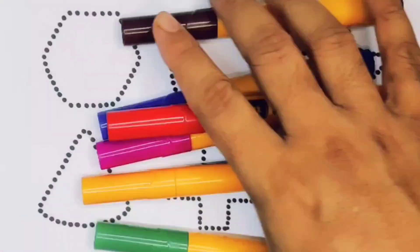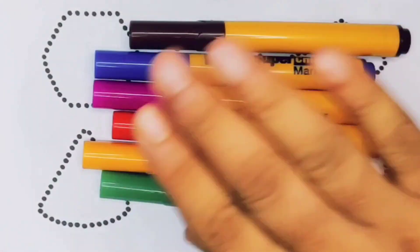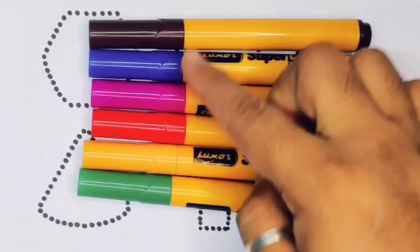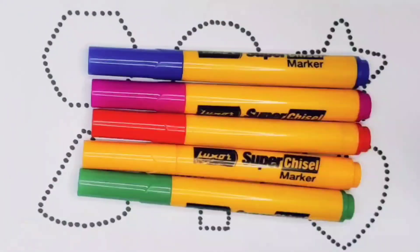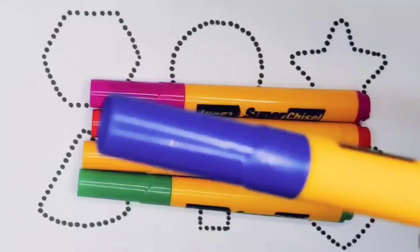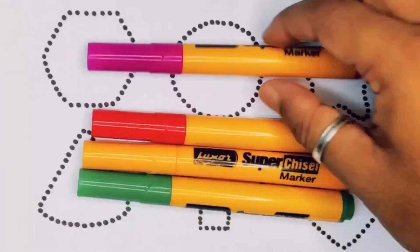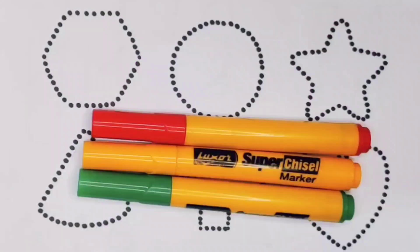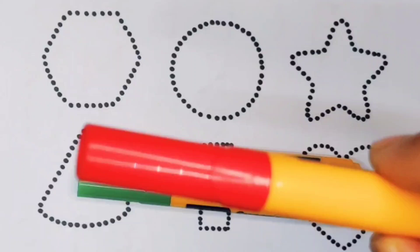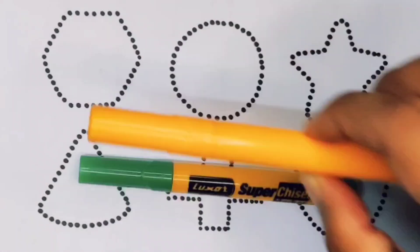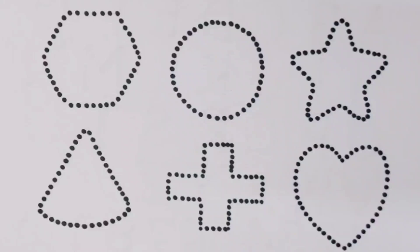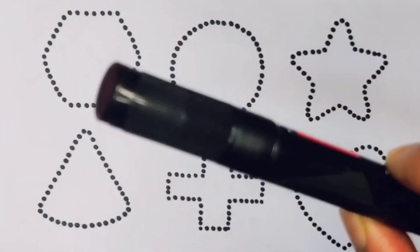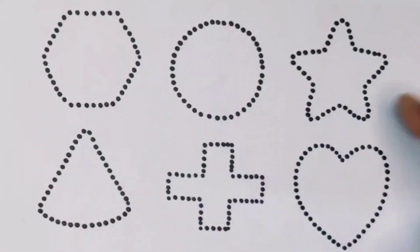Hello kids, welcome to my new video. First we're going to know the colors name: chocolate color, blue color, pink color, red color, orange color, light green color, and black color. Now let's learn the 2D shapes.